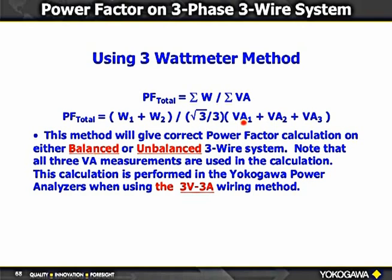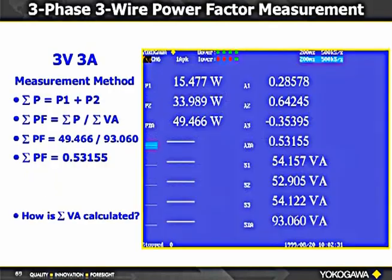Here's another example of the 3V3A measurement method with the two-wattmeter method: total power reads 93 W, total VA is 49 VA, and power factor is 0.53.